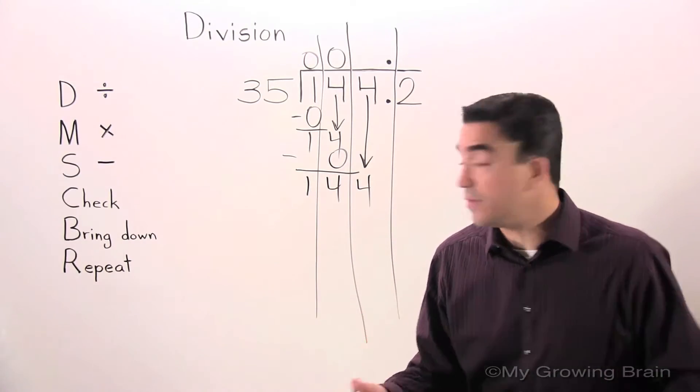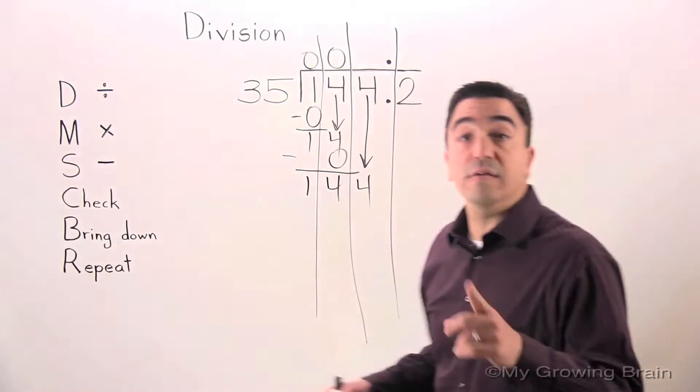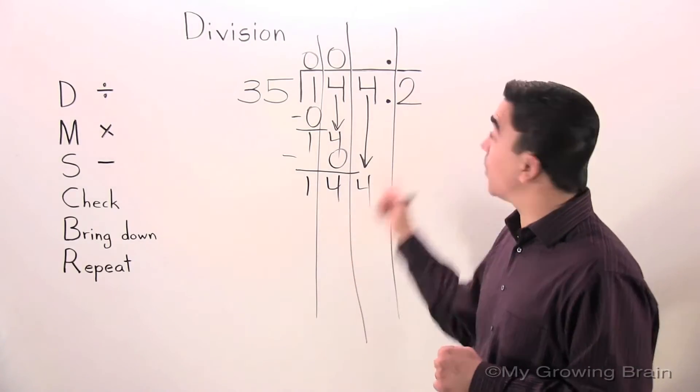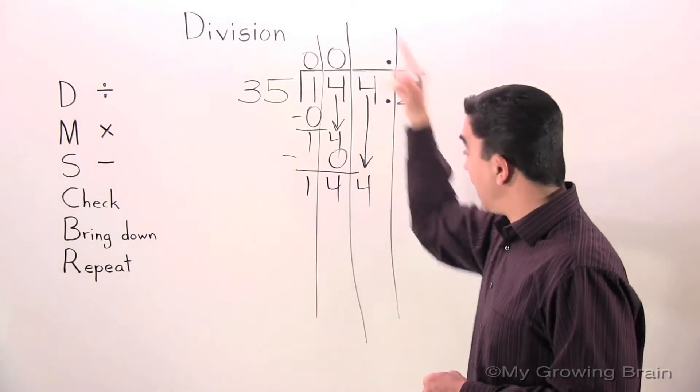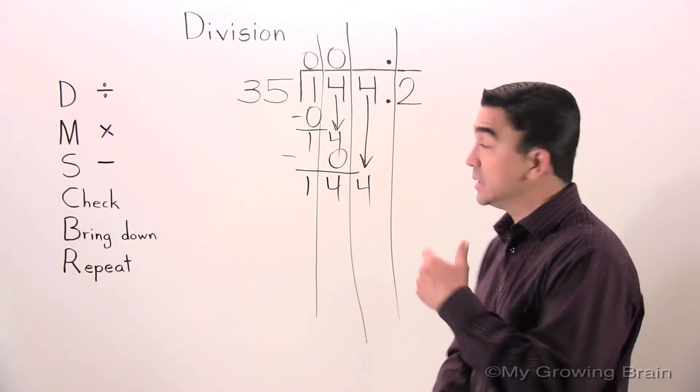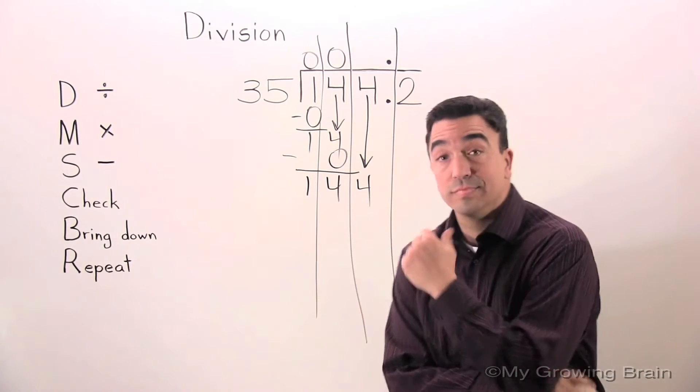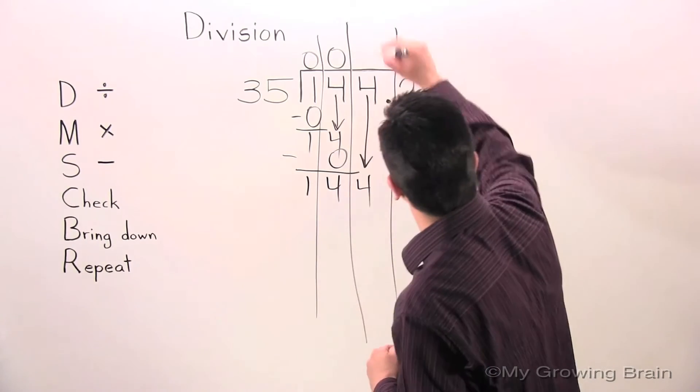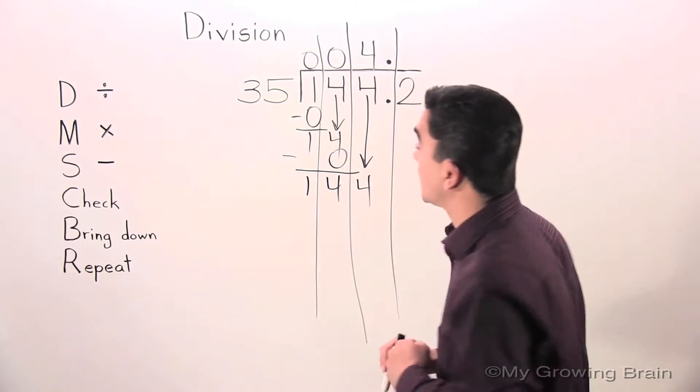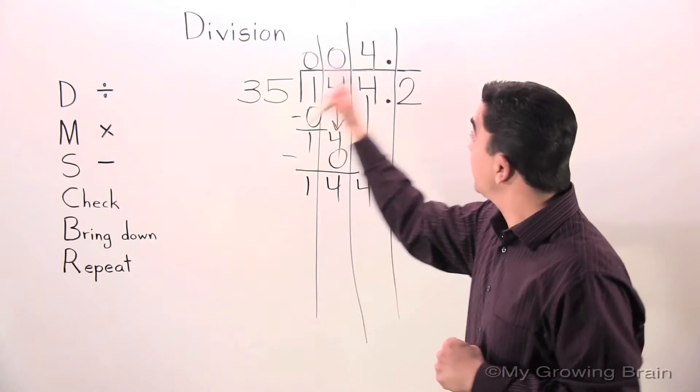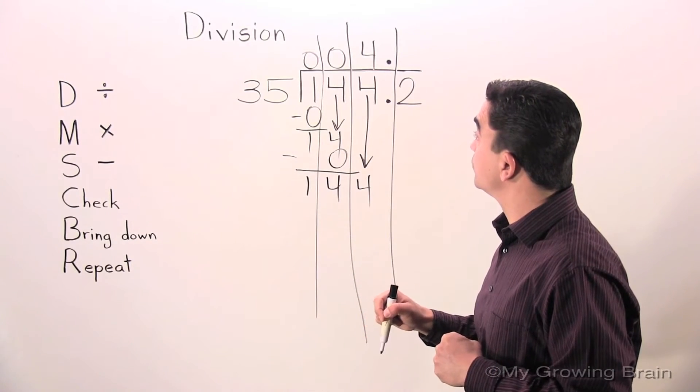Repeat the whole process. Back to the top: divide. 144 divided by 35, or 35 into 144. How about 4. 35 times 4 is 140.